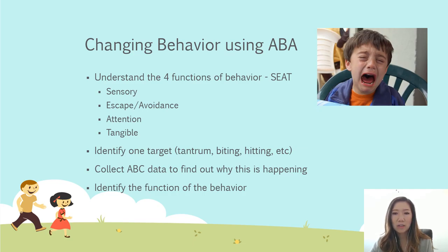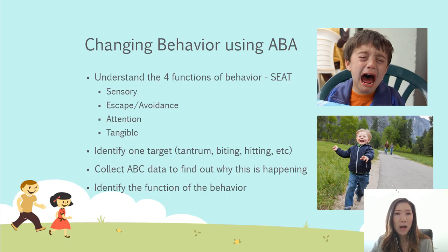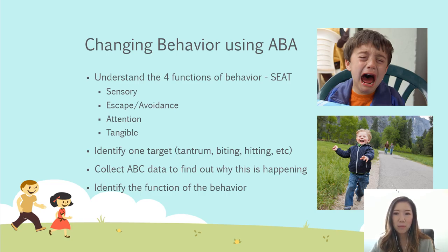Next, we're going to talk about changing problem behaviors. There are four functions of behavior and you need to understand why it's happening. The acronym is SEAT — S-E-A-T. It could be because of sensory needs, escape/avoidance, attention-seeking, or access to tangible preferred things. You want to identify one target behavior you're trying to change and work on collecting ABC data — what happens before the behavior, the behavior itself, and the consequence. We really don't know the function until we examine the behavior.